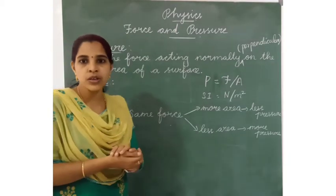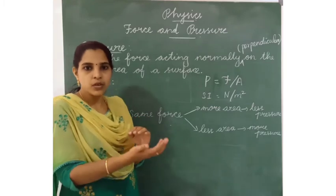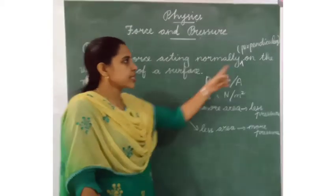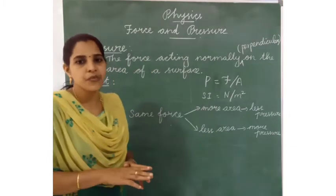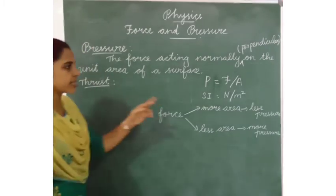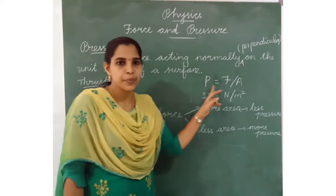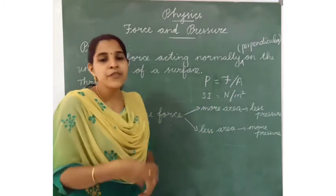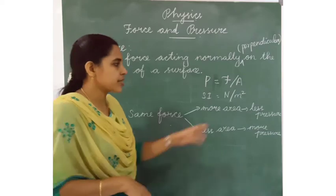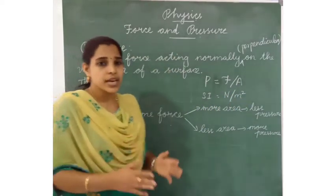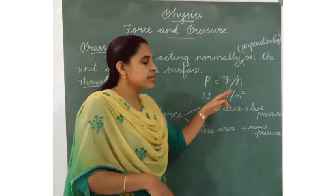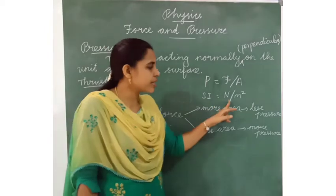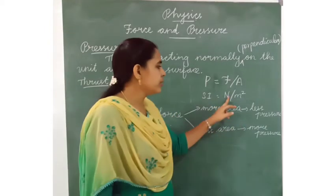P is equal to F divided by A. P is pressure. F is the applied force perpendicular to the area of the surface. A is the area of the surface. F is the force applied to the perpendicular surface. The SI unit of pressure is Newton per meter square. Another SI unit is Pascal — P-A-S-C-A-L. We write it in short form as Pa.